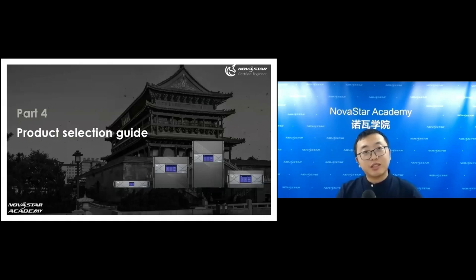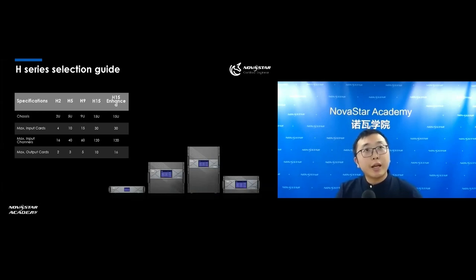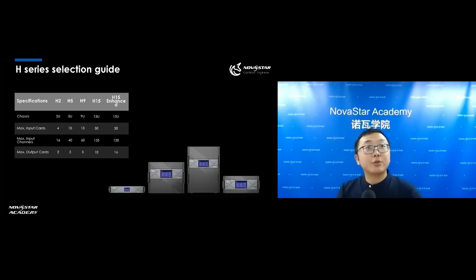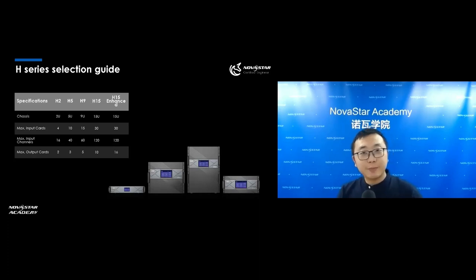The last part is the product selection guide, so you can know which device to use. We have five models: H2, H5, H9, H15, and H15 Enhanced. They have different sizes — for example, H2 is 2U and H5 is 5U, representing different heights. H2 supports up to four input cards, while H15 supports up to 30 input cards, meaning you can connect up to 120 input sources to H15.